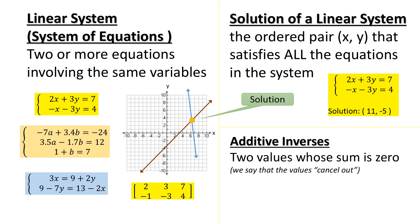Finally, additive inverses are two values whose sum is zero. We say that the values cancel out. Negative 9m and 9m are additive inverses because they add up to zero. And also 3y and negative 3y will combine to give us zero.